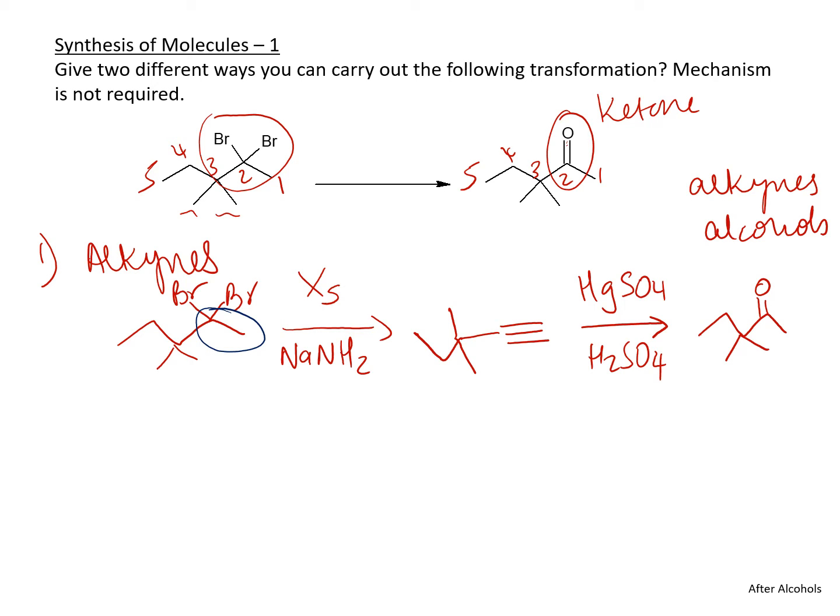Now from alcohols. How do we get ketones from alcohols? You will actually have to do oxidation in order to get a ketone. So now we need to figure out how to get an alcohol.